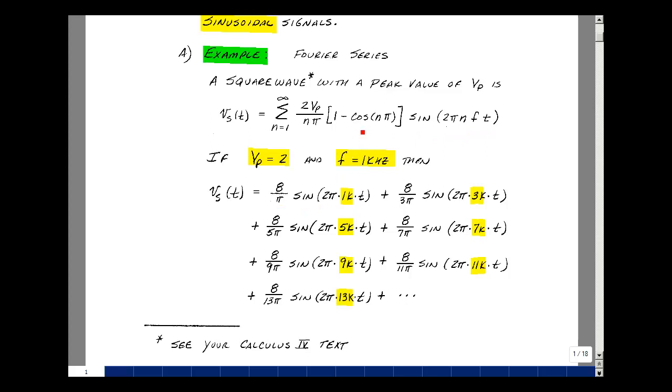For n equals 2, I get the cosine of 2π, which is equal to 1, and that makes this term 0. That term drops out. When n is equal to 3, I get this term. 4 goes to 0, 5 is this term, 6 goes to 0, and so on down the line.